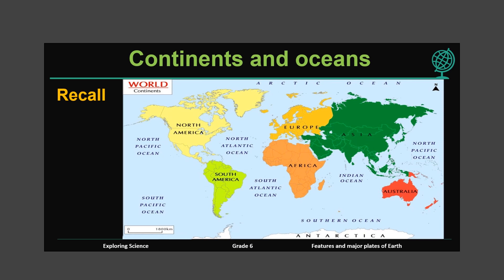The smallest continent is Australia, shown in red color. The coldest continent is Antarctica. North America is in light yellow and South America is in light green color. Do you know the biggest ocean? That is Pacific Ocean. Southern Ocean is near Antarctica, and there is Atlantic Ocean as well.